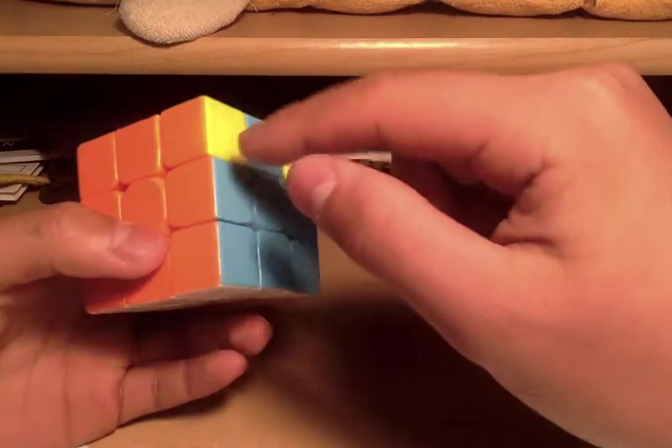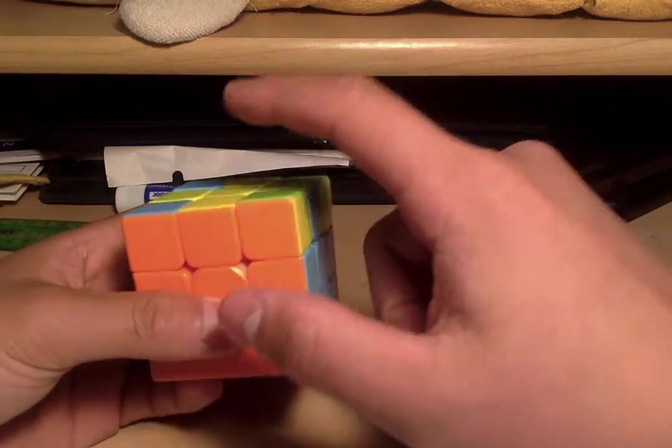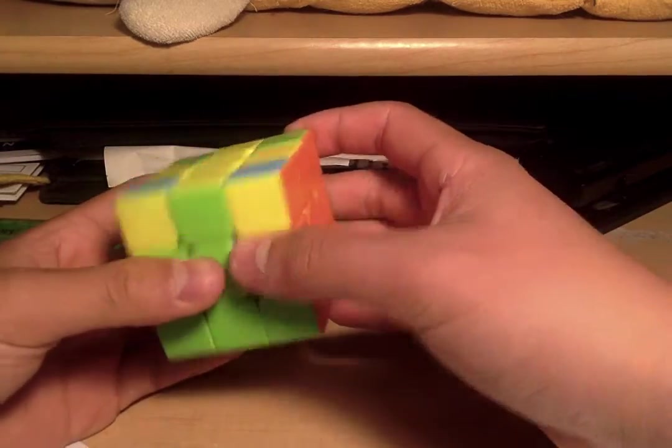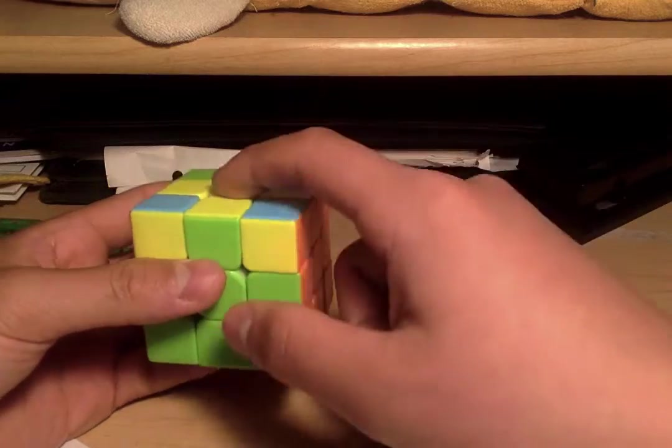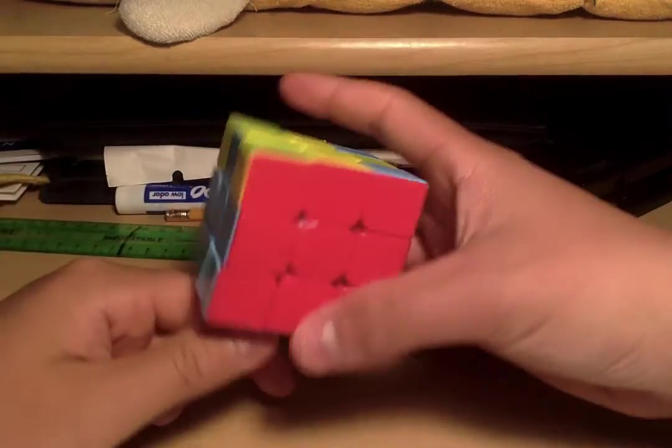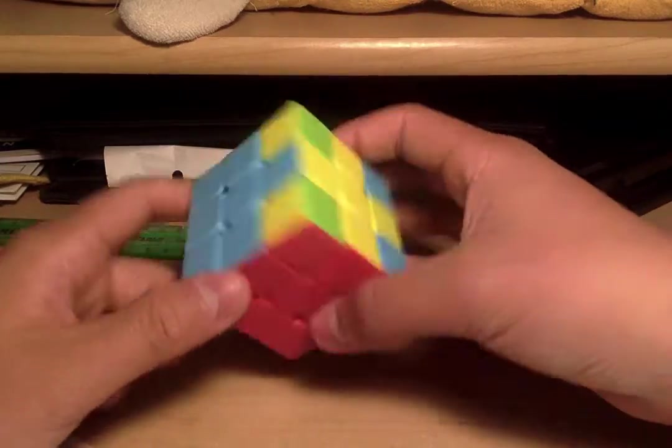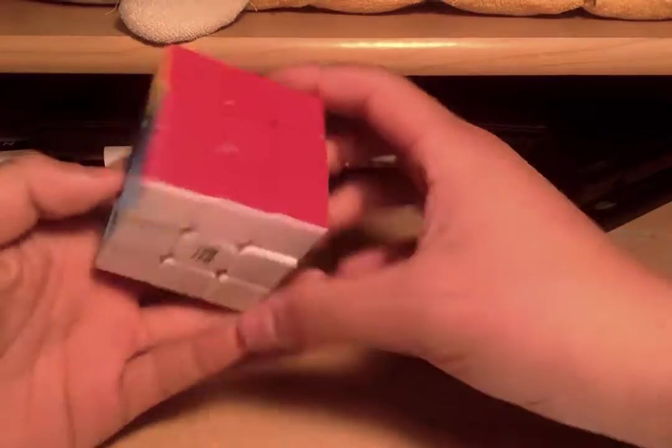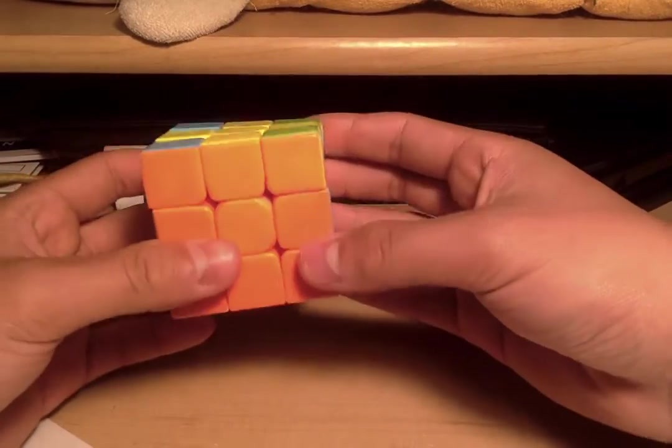So you just go around: yellow, orange, green; yellow, orange—this is not green; yellow, blue, orange. Keep looking until you find one. But if you can't find any, just pick whichever side and do this.